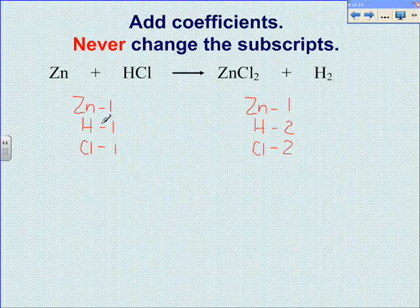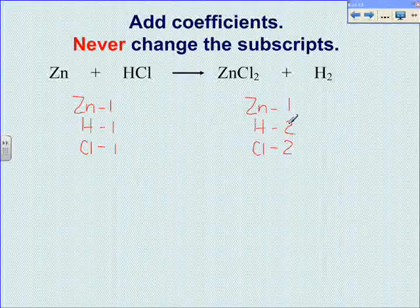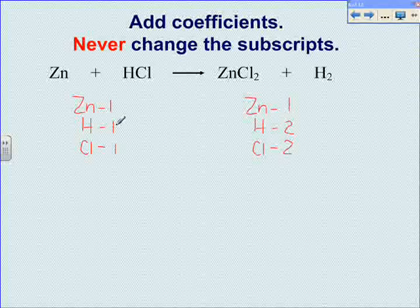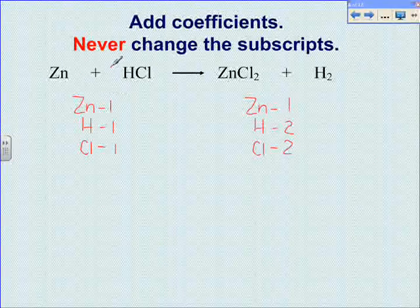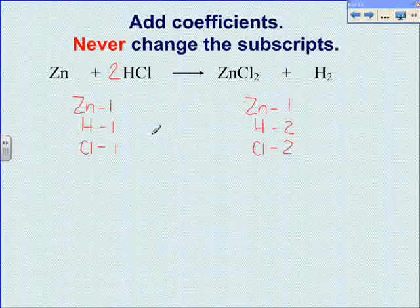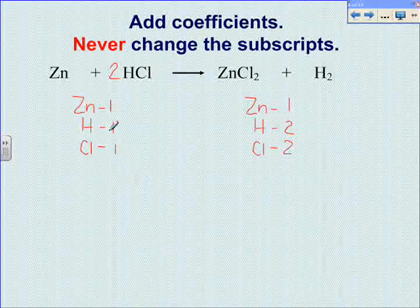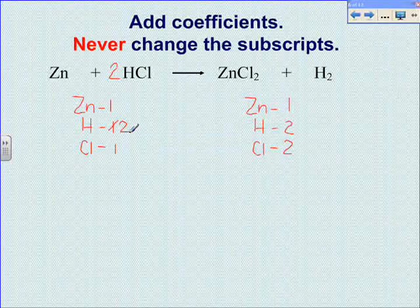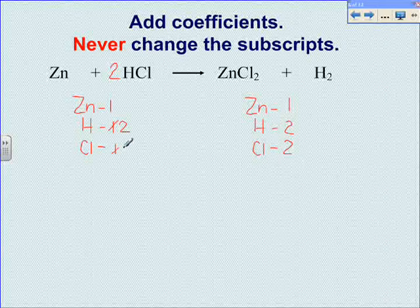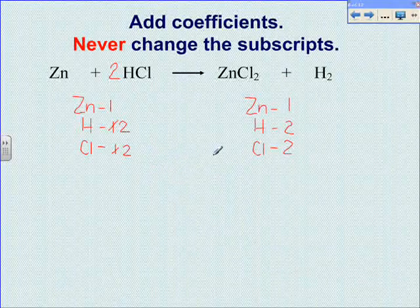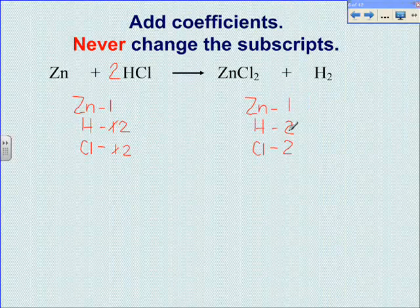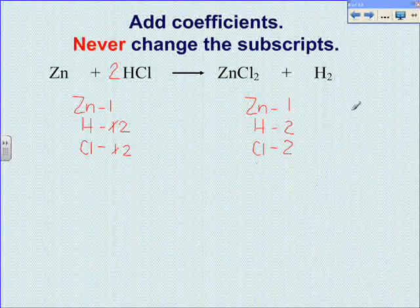The hydrogen, however, is not balanced. The right side has two atoms of hydrogen while the left only has one. We need to make it so this is even. In order to make the hydrogens even, we must add a coefficient of two before the hydrogen on the left side. Then we must change the number in our list. We now have two hydrogens on the left side and we also have two chlorines. Now if we compare the list of numbers, they are the same: 1, 2, 2 on each side. This equation is now balanced.